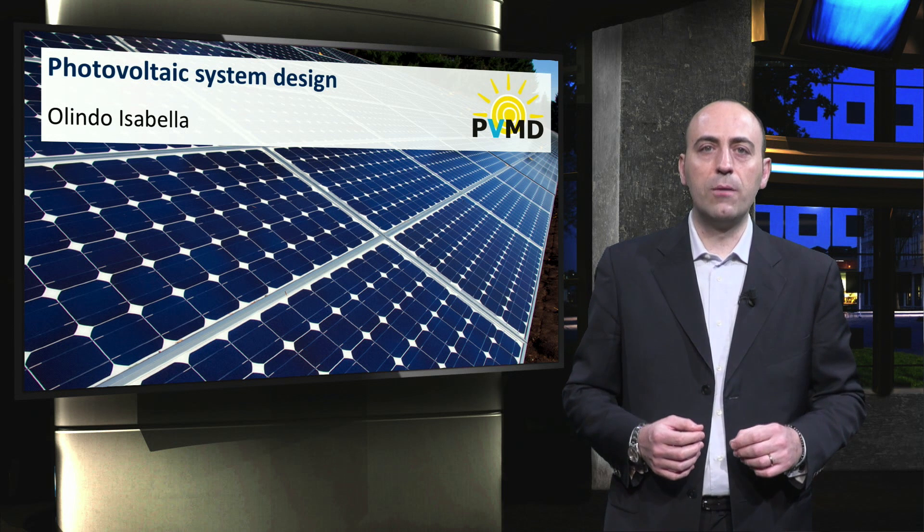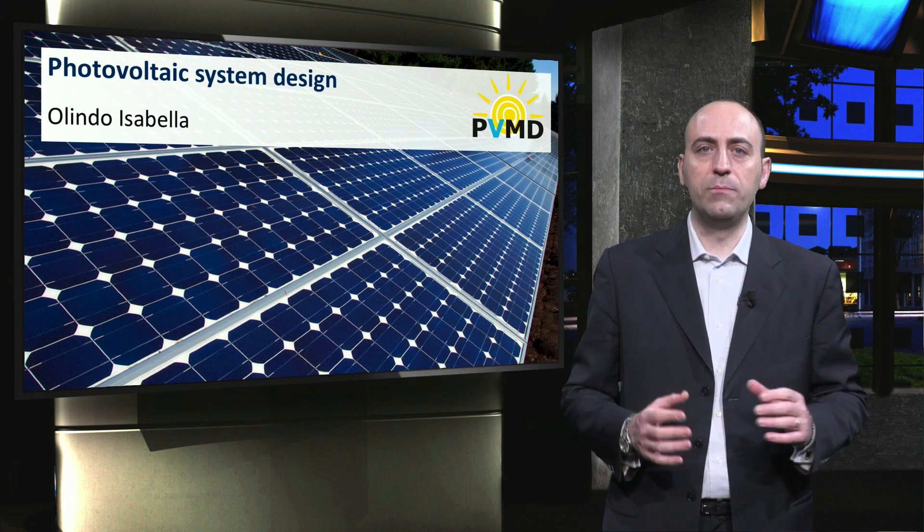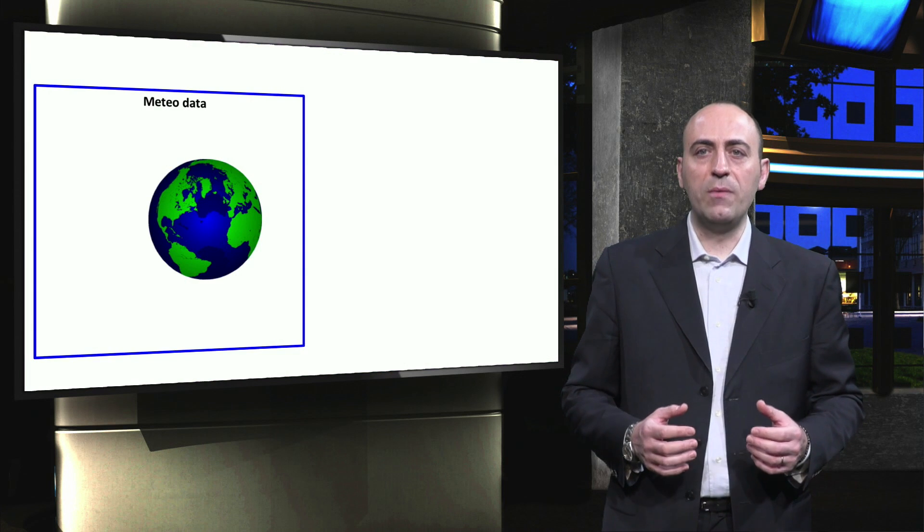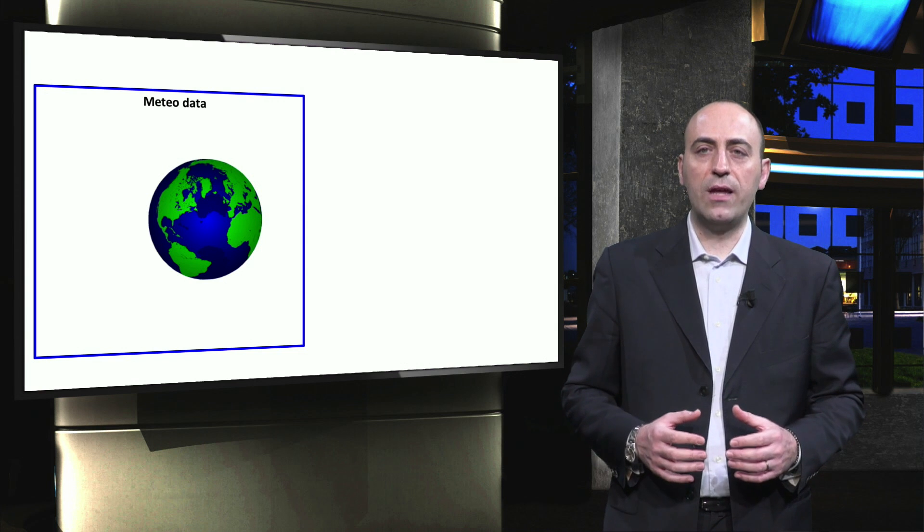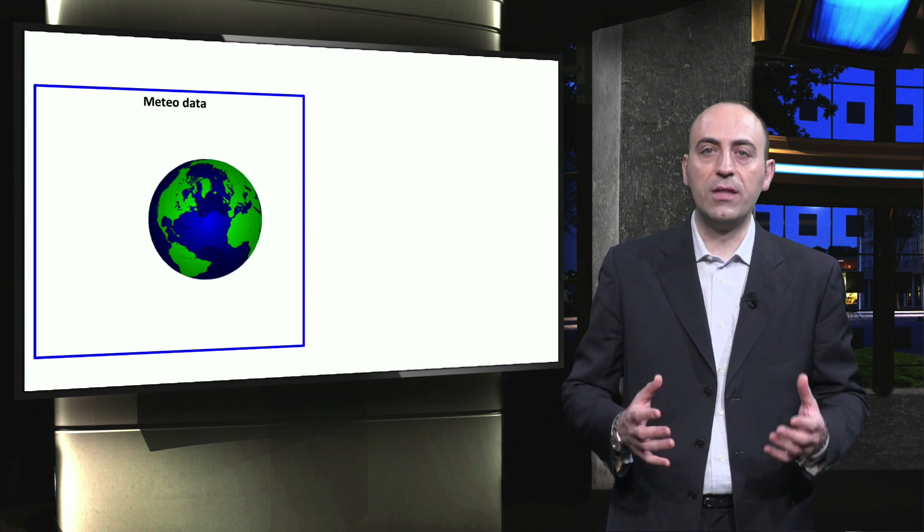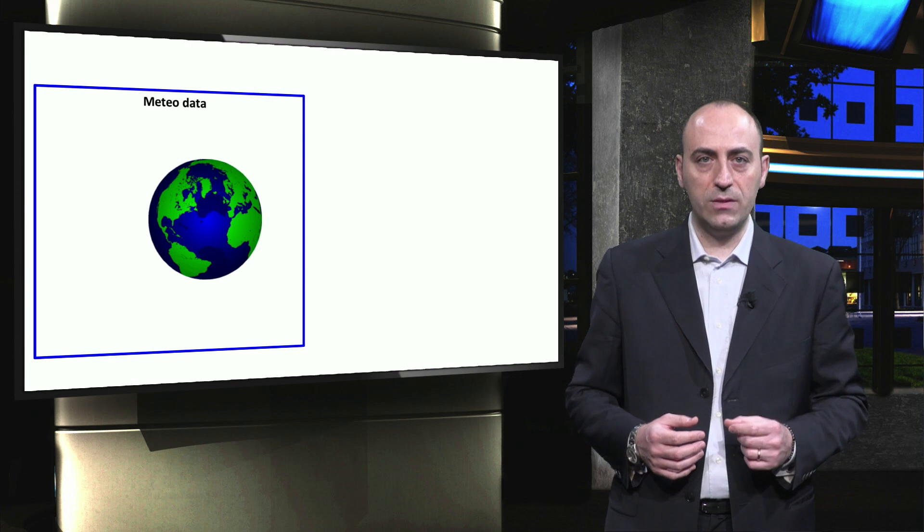In this video you will learn about all the different steps involved in PV system design. The performance of a PV system is strongly location dependent. The design process therefore starts with collecting meteorological data for the specific location of your PV system.